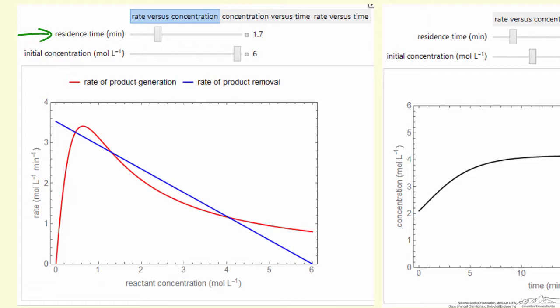So you can change the residence time. The figure on the left, when selecting rate versus concentration, the only thing that can be changed is the residence time. The residence time changes the intersection, so the solutions, if you like, three solutions to the mass balance. Only this one and this one is a stable solution, and which of those two solutions it goes to depends on what the initial concentration is in the reactor.